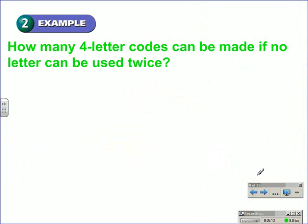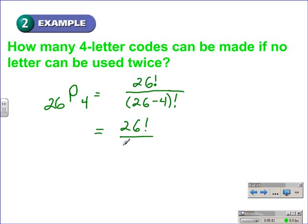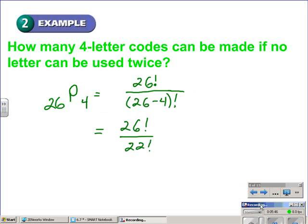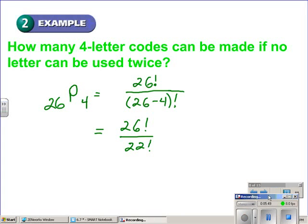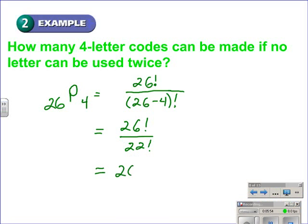In example 2, we're asked to find how many 4-letter codes can be made if no letter can be used twice. Since there are 26 letters in the English alphabet, that would be 26 permutate 4, or 26 things taken 4 at a time. We could write that as 26 factorial over 26 minus 4 factorial. That gives us 26 factorial over 22 factorial. The 22 factorials cancel out and leave us with 26 times 25 times 24 times 23. When you reach for your calculator, you should get 358,800.